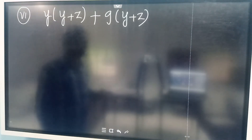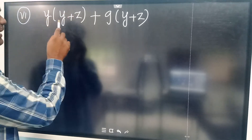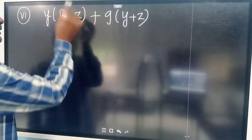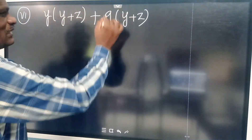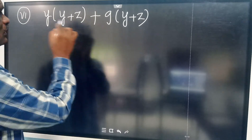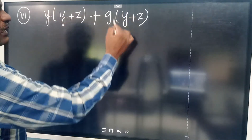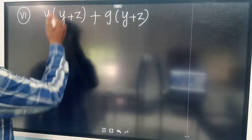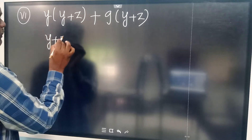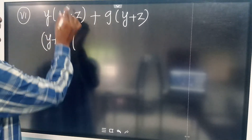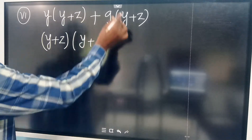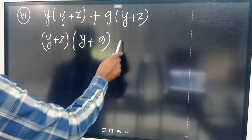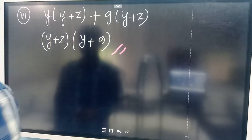In this question, some terms are already taken common. What remains after taking Y as common is Y plus Z. Here 9 is taken common, leaving Y plus Z. In these two terms, we have Y plus Z common in both terms. So take out Y plus Z. What will remain is Y and 9 respectively. So the factors are Y plus Z and Y plus 9.